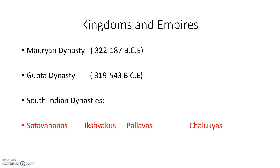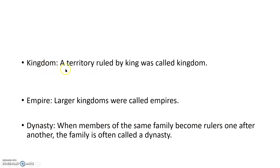Before we discuss the Mauryan Dynasty, let us understand the meanings of some key words. A kingdom is a territory ruled by a king. A larger kingdom is called an empire. A dynasty is when members of the same family become rulers one after another — from the same family only, the rulers ruled that particular kingdom or empire.